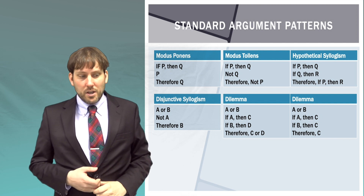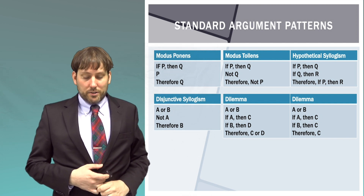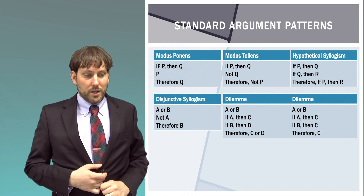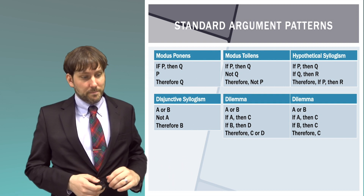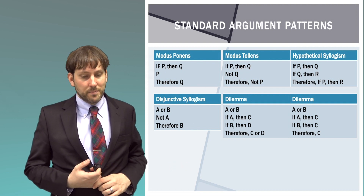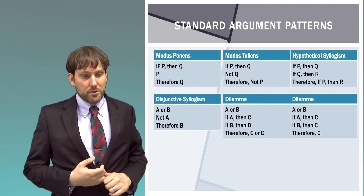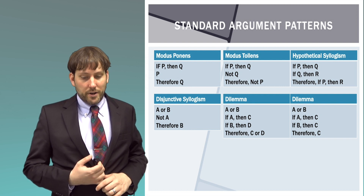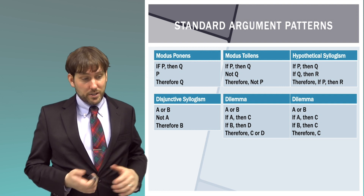Modus tollens: if Dr. K is hungry, then Dr. K will eat at McDonald's. Dr. K is not eating at McDonald's, therefore Dr. K is not hungry. Disjunctive syllogism: Dr. K either likes pears or melons. Dr. K does not like pears, therefore Dr. K likes melons.